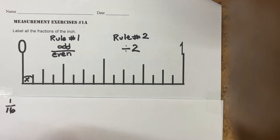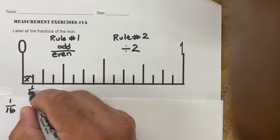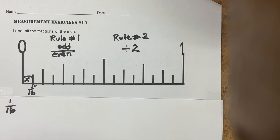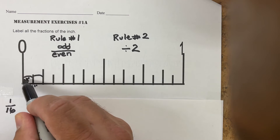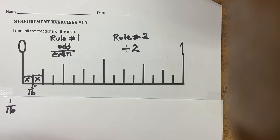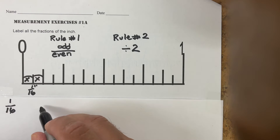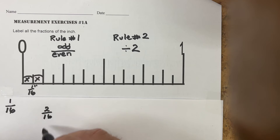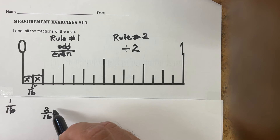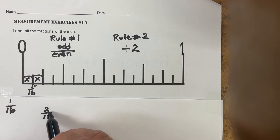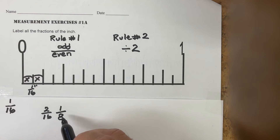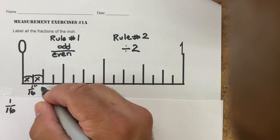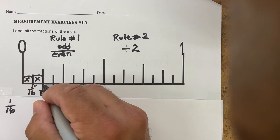We need to ask ourselves: is that answer odd over even? Yes it is, so the answer is final — it is one-sixteenth of an inch. Now let's go to the next one. From zero to this increment, that's two out of a possible 16. Is two over 16 odd over even? No, so we divide the numerator and denominator by two: two divided by two is one, 16 divided by two is eight. That is odd over even, so the answer is one-eighth of an inch.